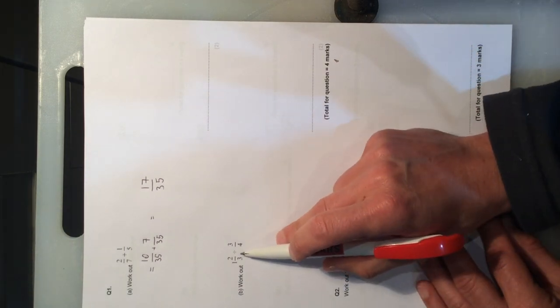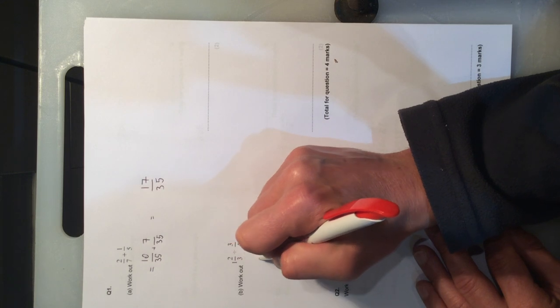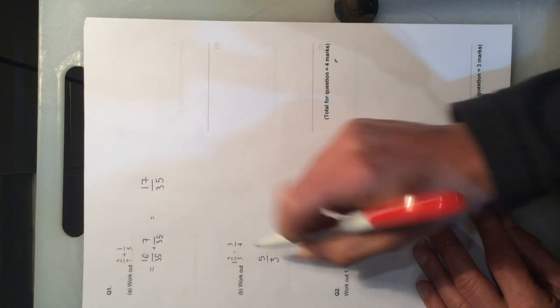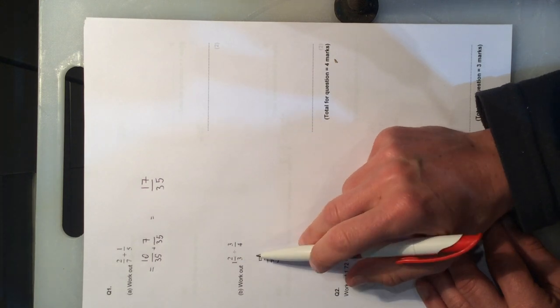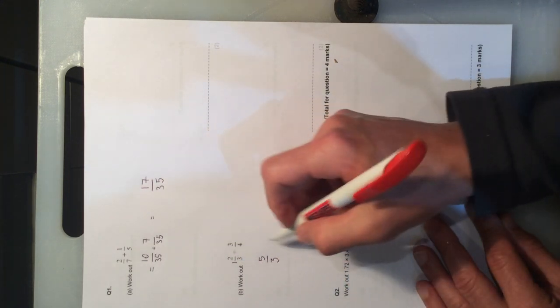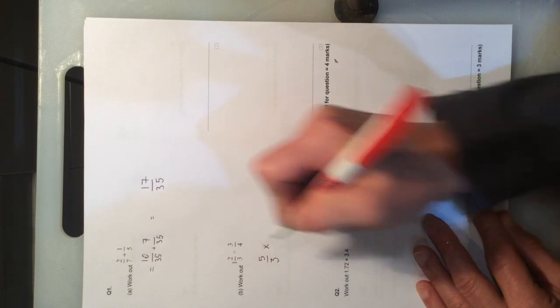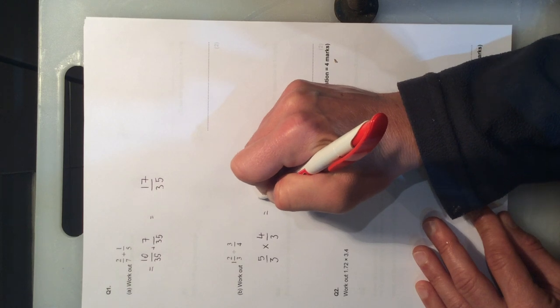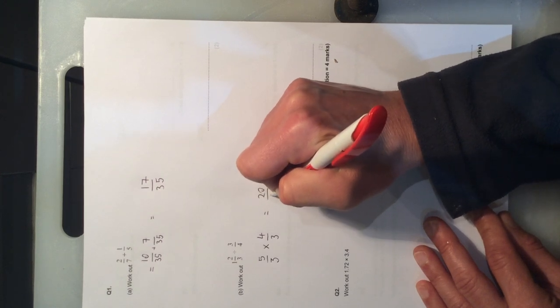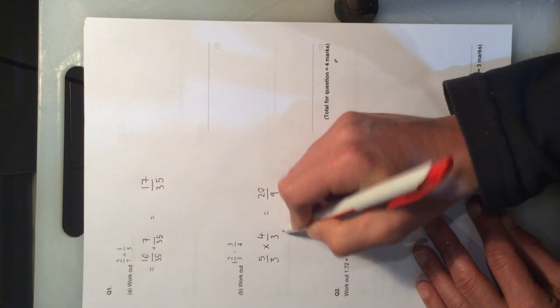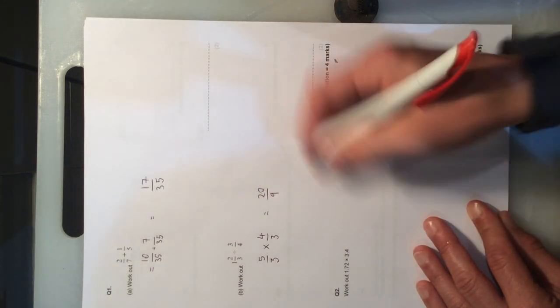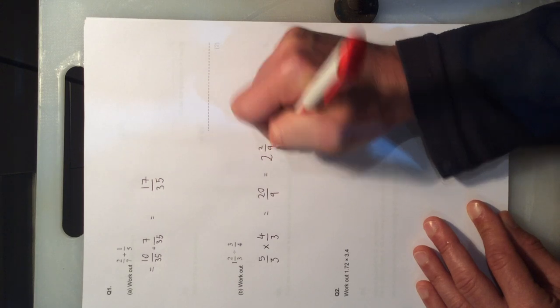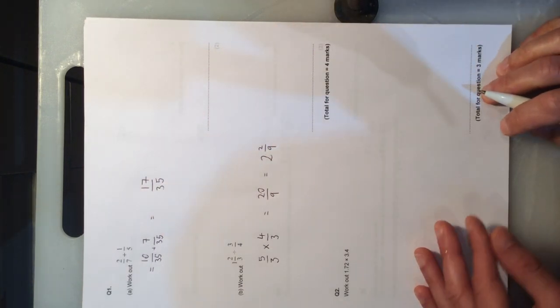The next question is dividing. We've got a mixed number, so I'm going to turn that into an improper fraction. 1 times by 3 is 3, add 2 is 5 thirds. Then we're going to multiply by the reciprocal - keep, change, flip. 5 times by 4 is 20 over 9. 3 times 3 is 9. That would give you full marks.